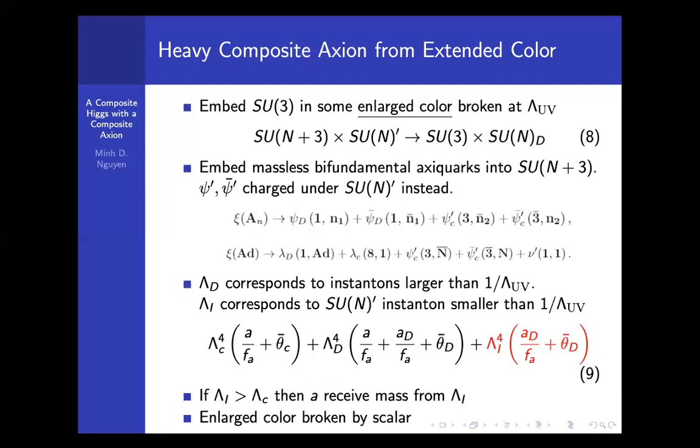Depending on the coupling of the Yukawa coupling of the quark in the SU(N)', Λi could be large. If Λi is greater than Λc, then we have a new source of mass in the effective potential. The axion will now receive mass from Λi, and it could be TeV scale even.